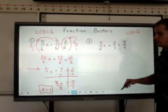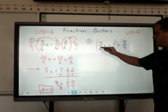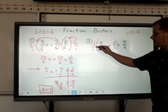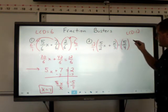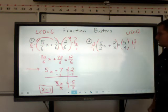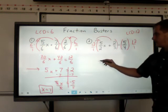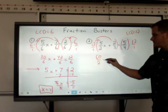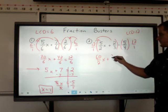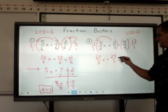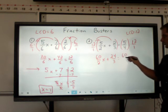For this one though, 12 is going to work. So kind of same process, we're going to multiply by 12 on both sides. You're going to end up with 60 over 2x, plus 24 over 3, equal to 60 over 4.